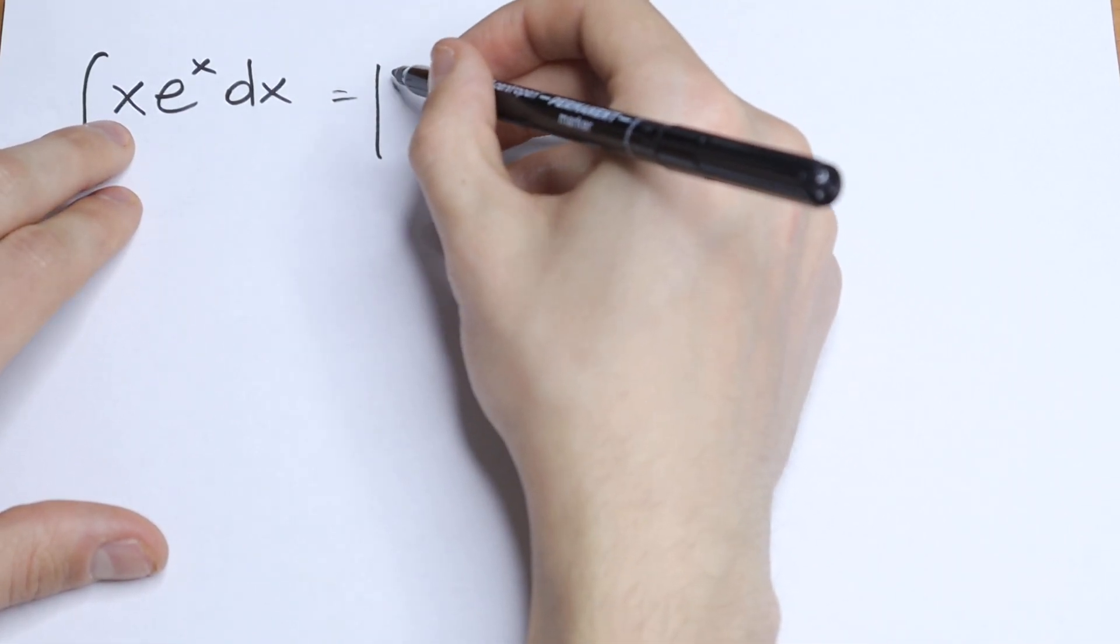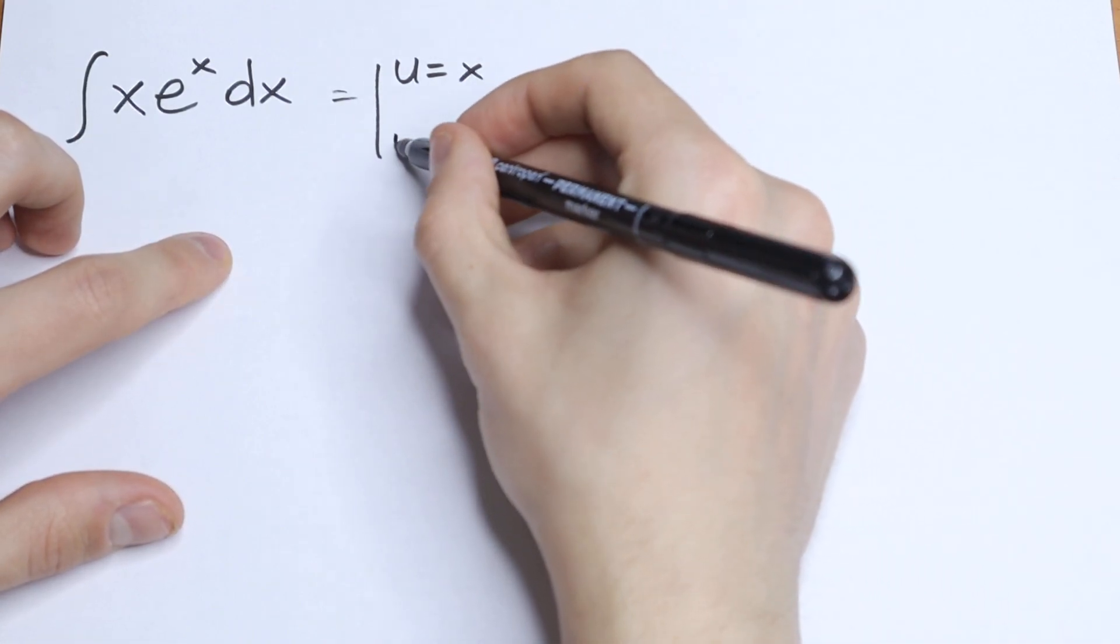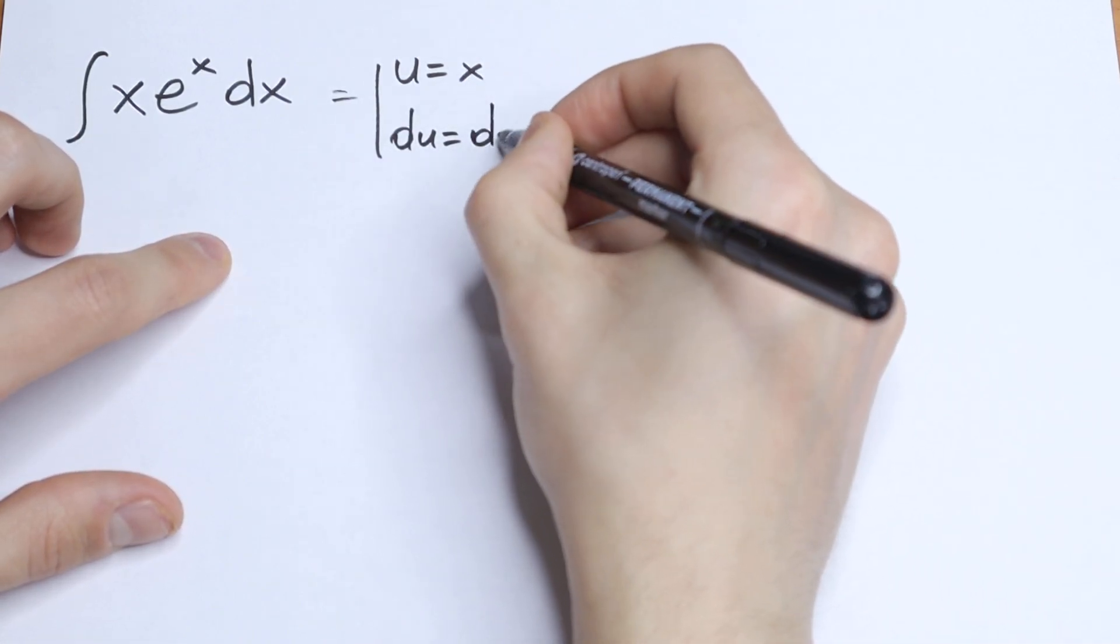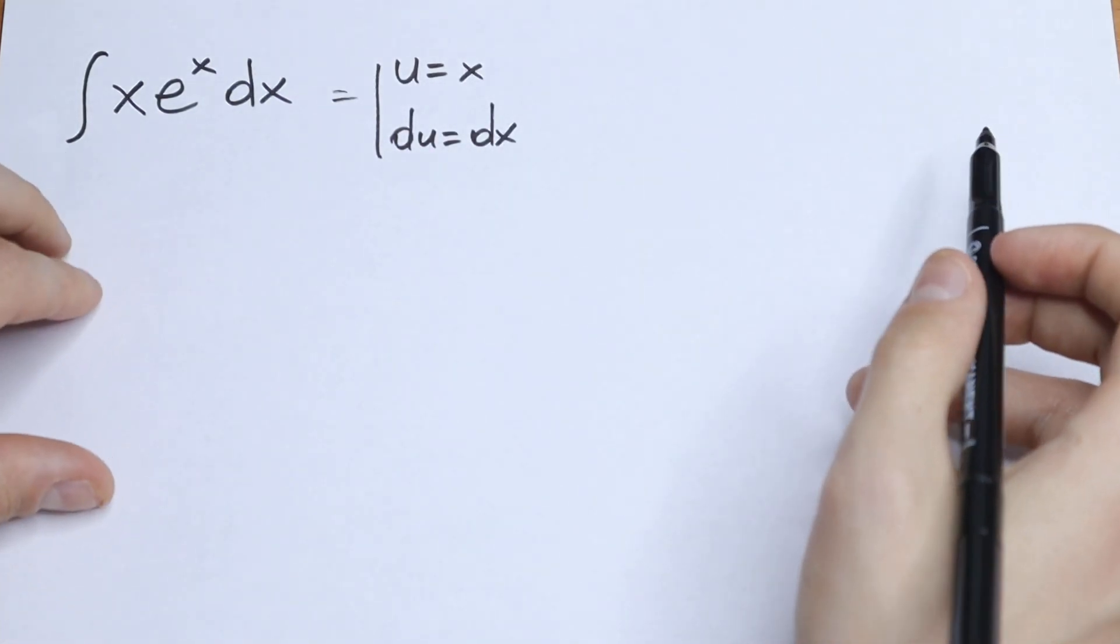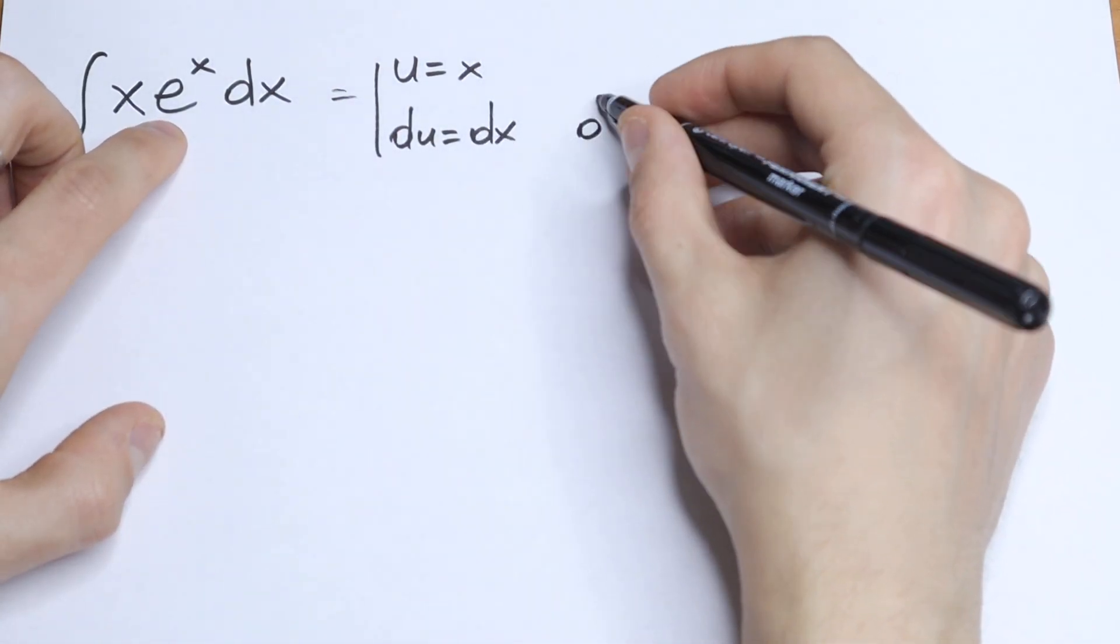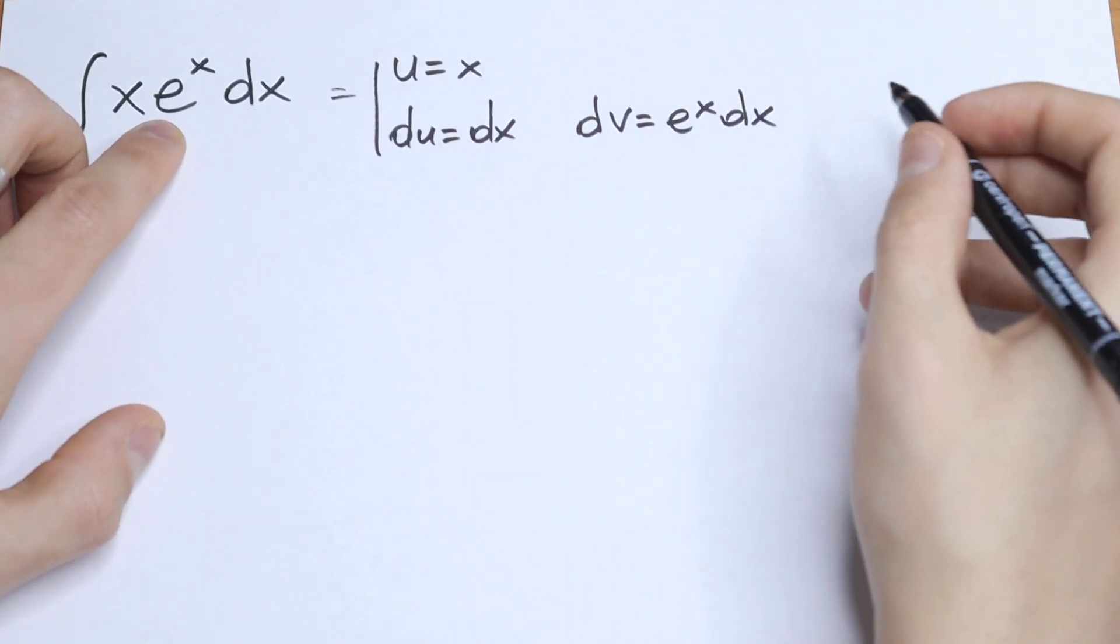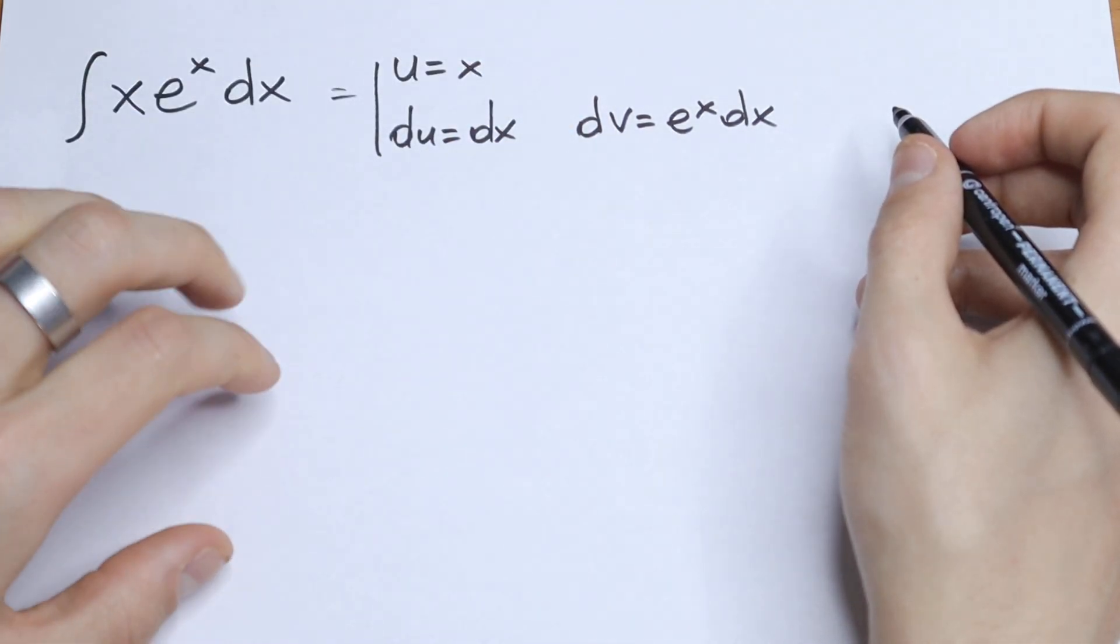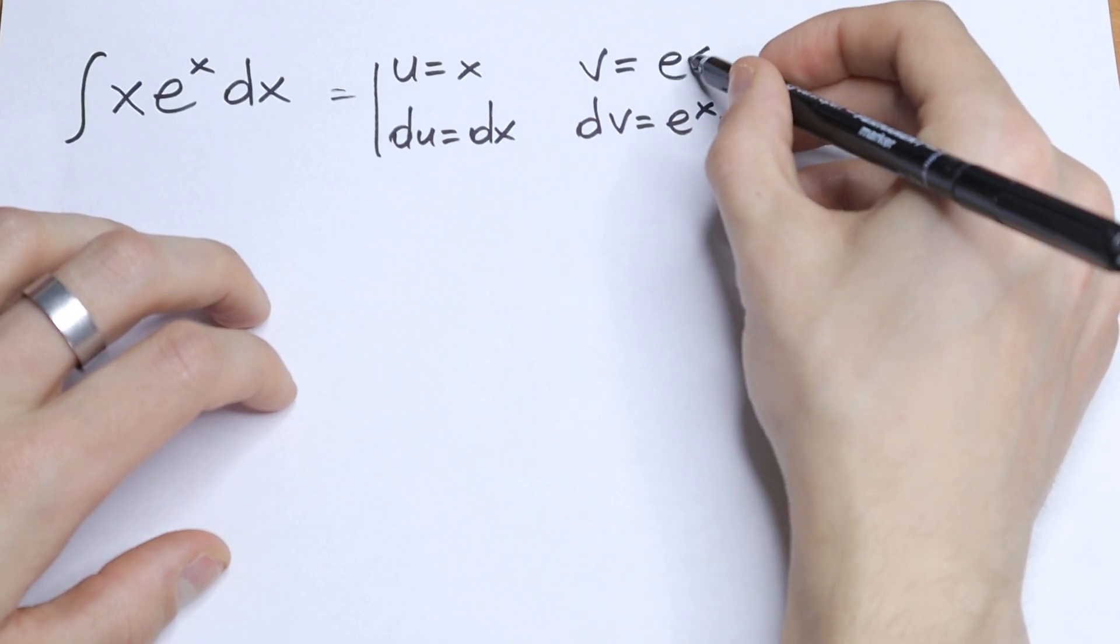So let's say u will be our x, and du will be our dx, because we find the derivative of u. And of course we need to find our v, because dv will be e to the power x dx. We need to find the integral of e to the power x. So v will be equal to e to the power x.